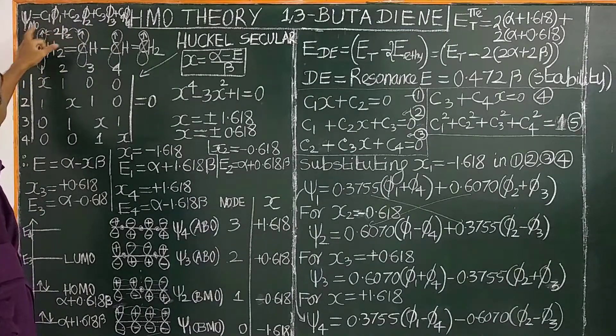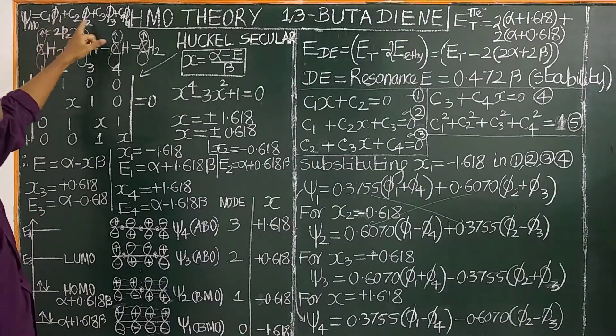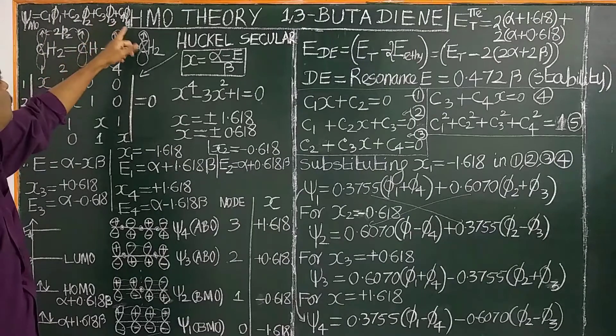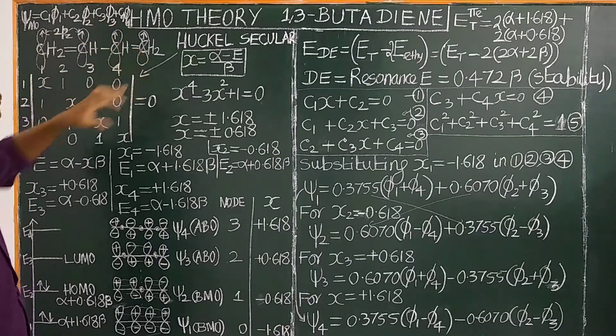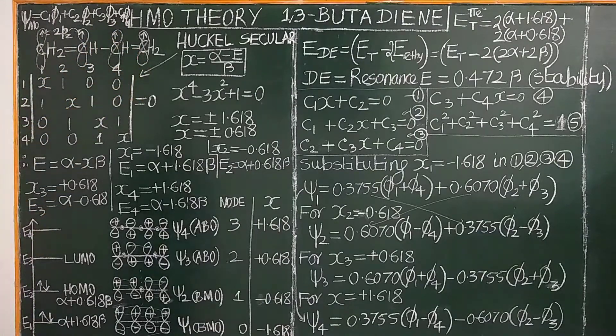The molecular orbital is written as: ψ = c1φ1 + c2φ2 + c3φ3 + c4φ4. So we have constructed the molecular orbitals using the linear combination of atomic orbitals.